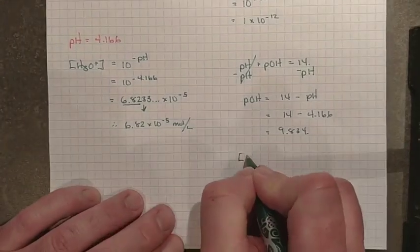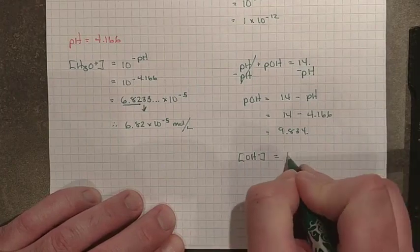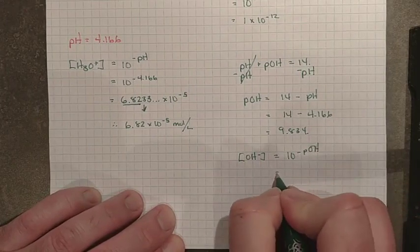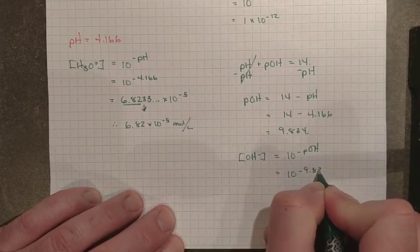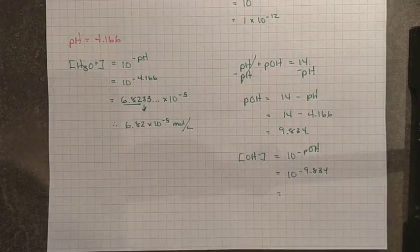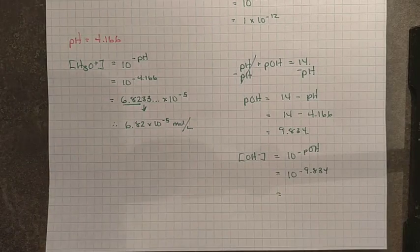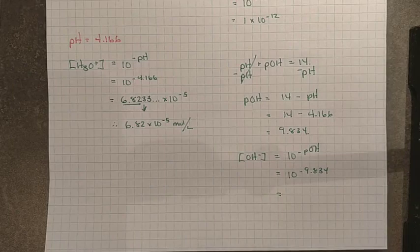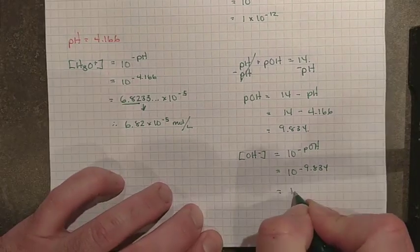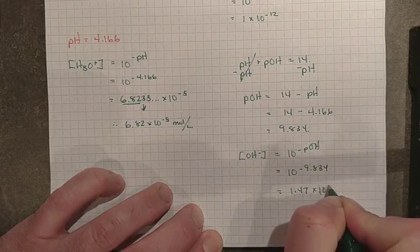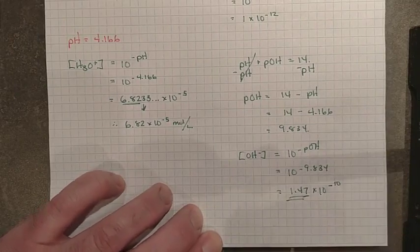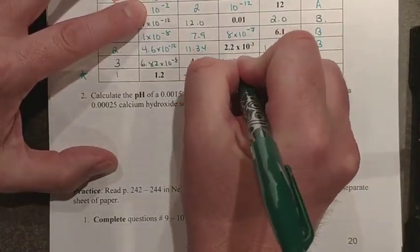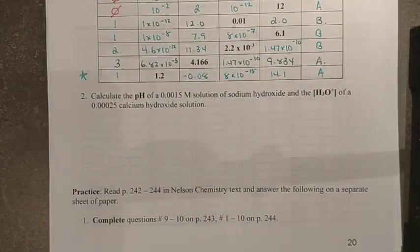So hydroxide ion concentration is just base 10 raised to the negative pOH. You have 10 raised to the negative 9.834, and so when you run that in your calculator here, you end up with 1.47 times 10 to the negative 10, and there's your 3-digit rounded answer. So 1.47 times 10 to the negative 10, and you have finished that part of the table.